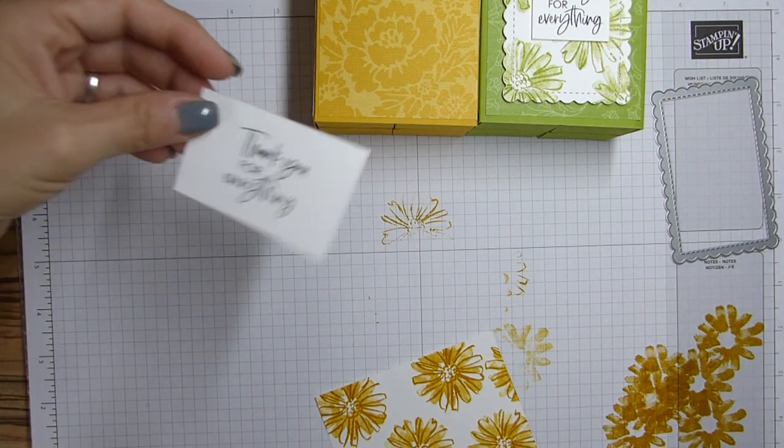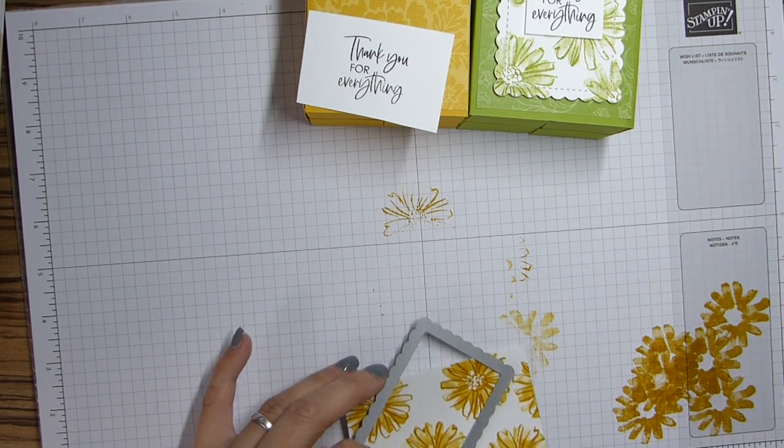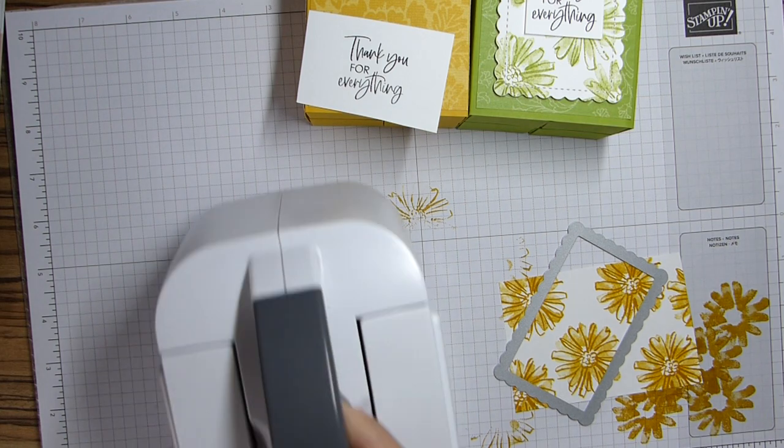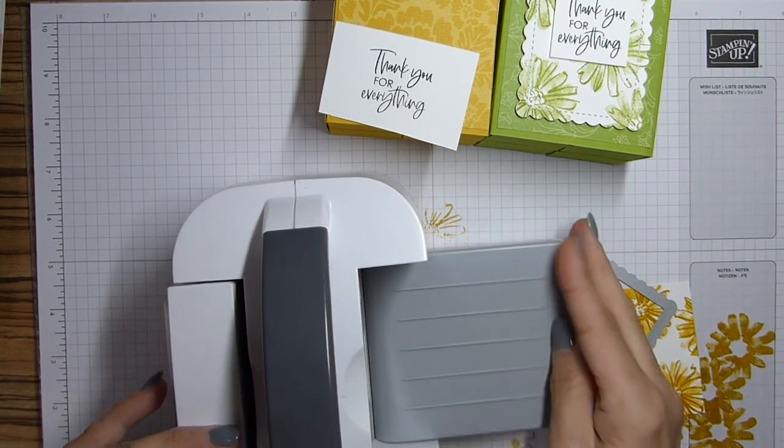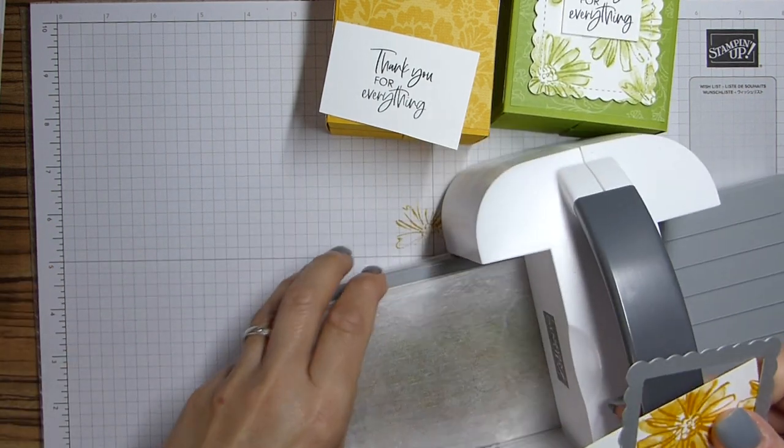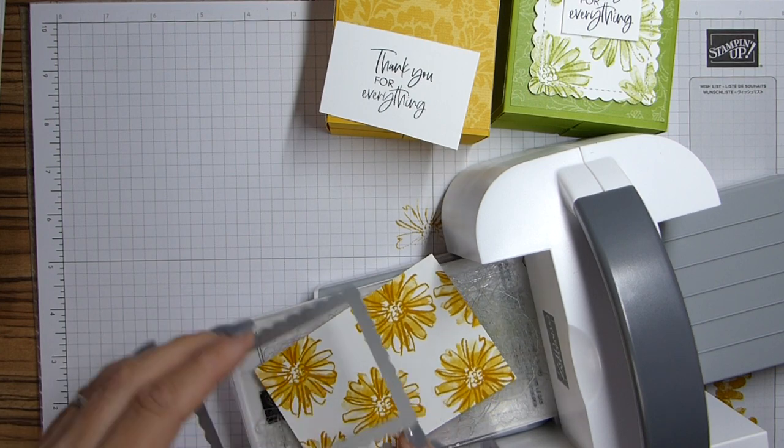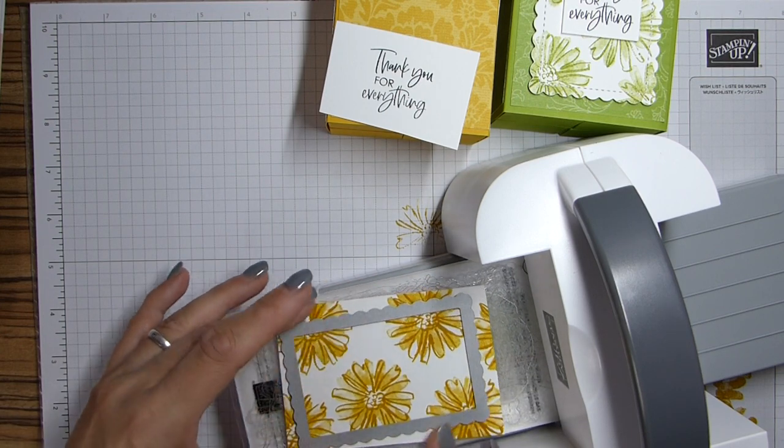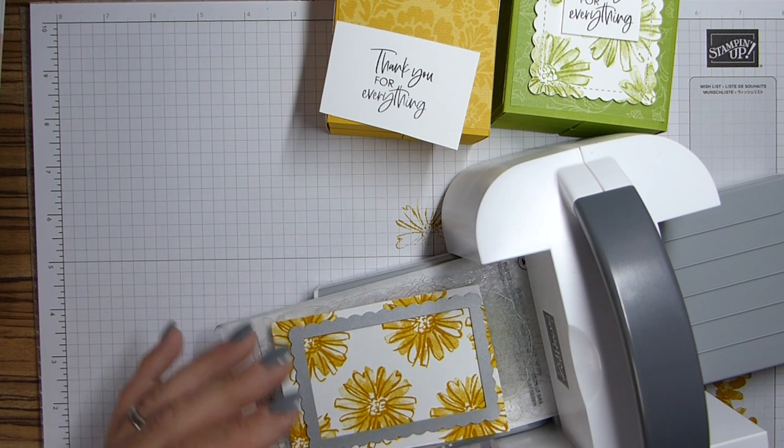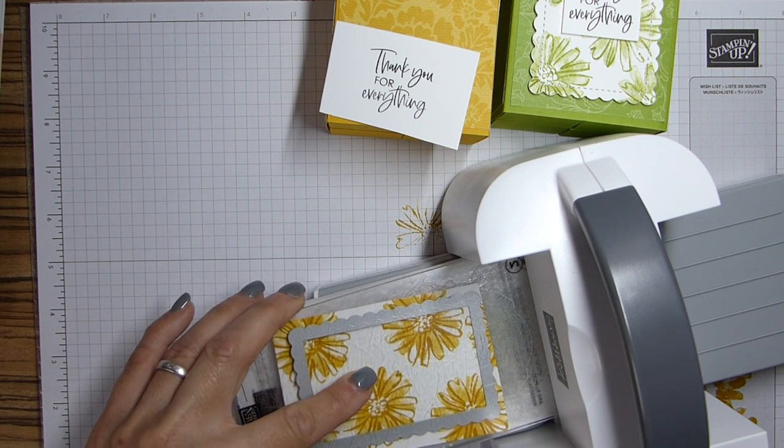And then I just need to die cut this one and trim the other one with my trimmer. So grab my little mini. Because this one is perfect for this. I'm just going to pop that on, like so, and run this one through.